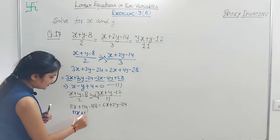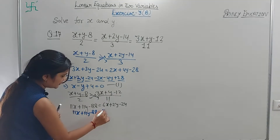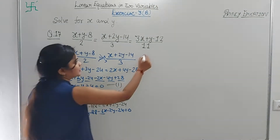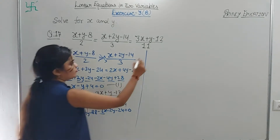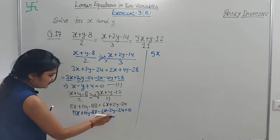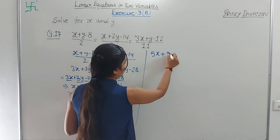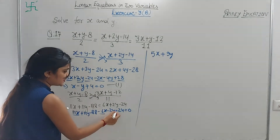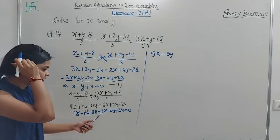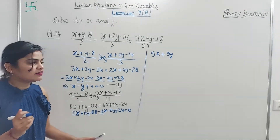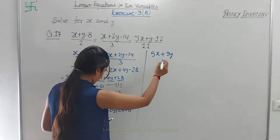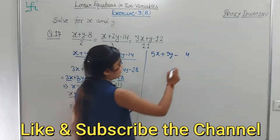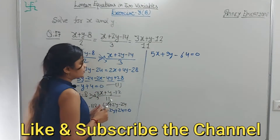11x + 11y - 88 - 6x - 2y - 24 = 0. So 11 minus 6 gives 5x, and 11y minus 2y gives plus 9y. The constants: when brought to the left side the sign changes, so 88 and 24 with different signs subtract — minus 64. So: 5x + 9y - 64 = 0. This is your second equation.